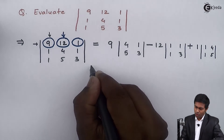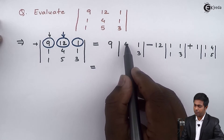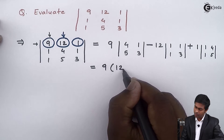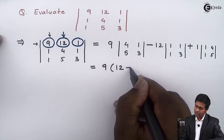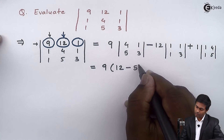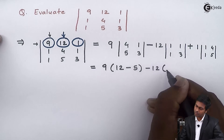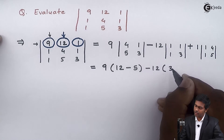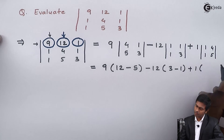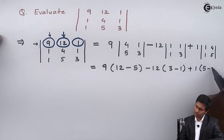We know how to find the determinant of a 2 by 2 order matrix: multiply the elements of the principal diagonal and subtract the multiplication of the elements on the secondary diagonal. So for the first minor: 4 into 3 is 12, minus 5 into 1 is 5. For the second minor: 3 into 1 is 3, minus 1 into 1 is 1. For the third minor: 5 into 1 is 5, minus 4 into 1 is 4.